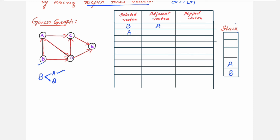Whatever you have pushed into the stack, you select that vertex under the selected column. So I select A and find its adjacent vertices. In the graph, A has an edge to C and an edge to D, so C and D are the adjacent vertices of A. I am choosing C. I write C as the adjacent vertex and push it into the stack. Now I select C and find its neighbors. C has only one adjacent vertex: E. I write E in the adjacent vertex column and push E into the stack.